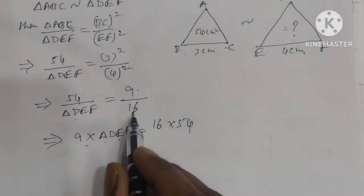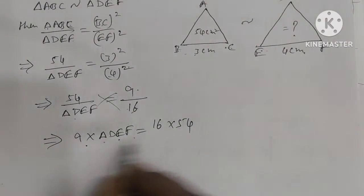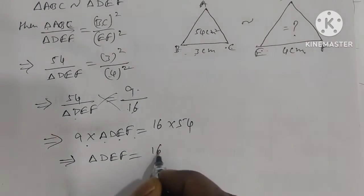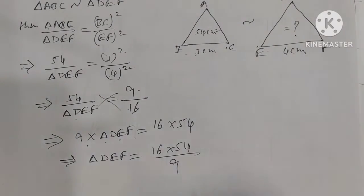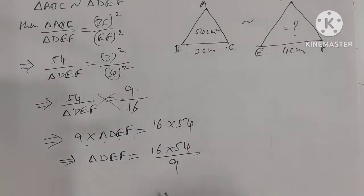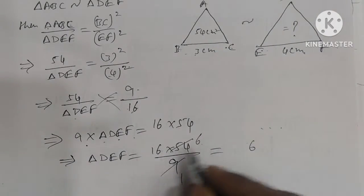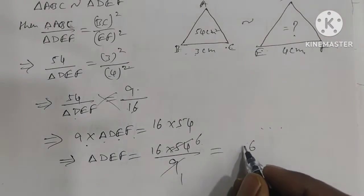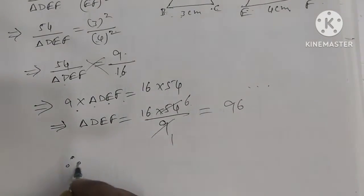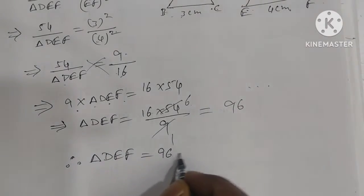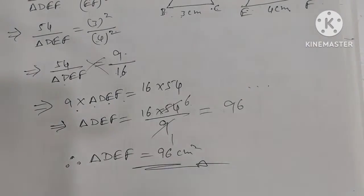Area of triangle DEF = 16 × 54 divided by 9. Simplifying: 16 × 6 = 96. Therefore, area of triangle DEF is equal to 96 cm². This is the answer.